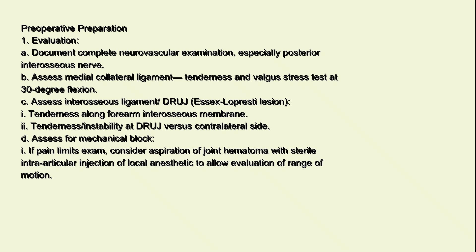Preoperative preparation — Evaluation: 1. Document a complete neurovascular examination, especially the posterior interosseous nerve. B. Assess the medial collateral ligament with tenderness and valgus stress test at 30-degree flexion. C. Assess the interosseous ligament/DRUJ for an Essex-Lopresti lesion, including tenderness along the forearm interosseous membrane, and tenderness/instability at the DRUJ versus the contralateral side. D. Assess for mechanical block; if pain limits the exam, consider aspiration of joint hematoma with sterile intra-articular injection of local anesthetic to allow evaluation of range of motion.